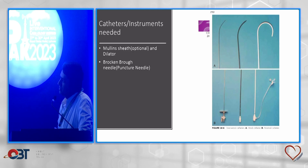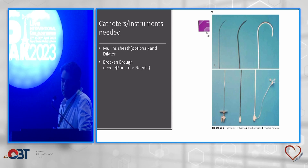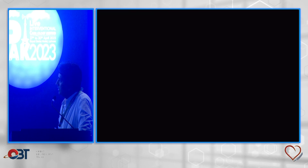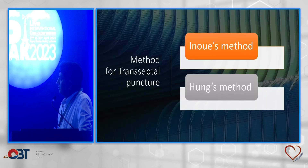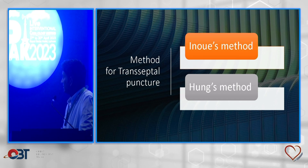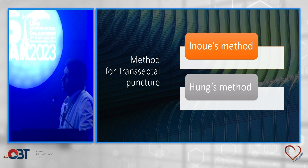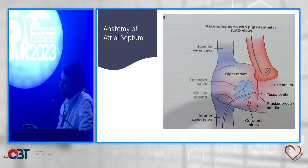The instruments for transseptal puncture include the Mullins sheath, dilator, Brockenbrough needle — this is the puncture needle. These are the instruments required. The two well-known methods are Brockenbrough and Inoue. What we focus on, what we perform and are training here, is the Inoue method. My discussion here will be on the Inoue method as well.